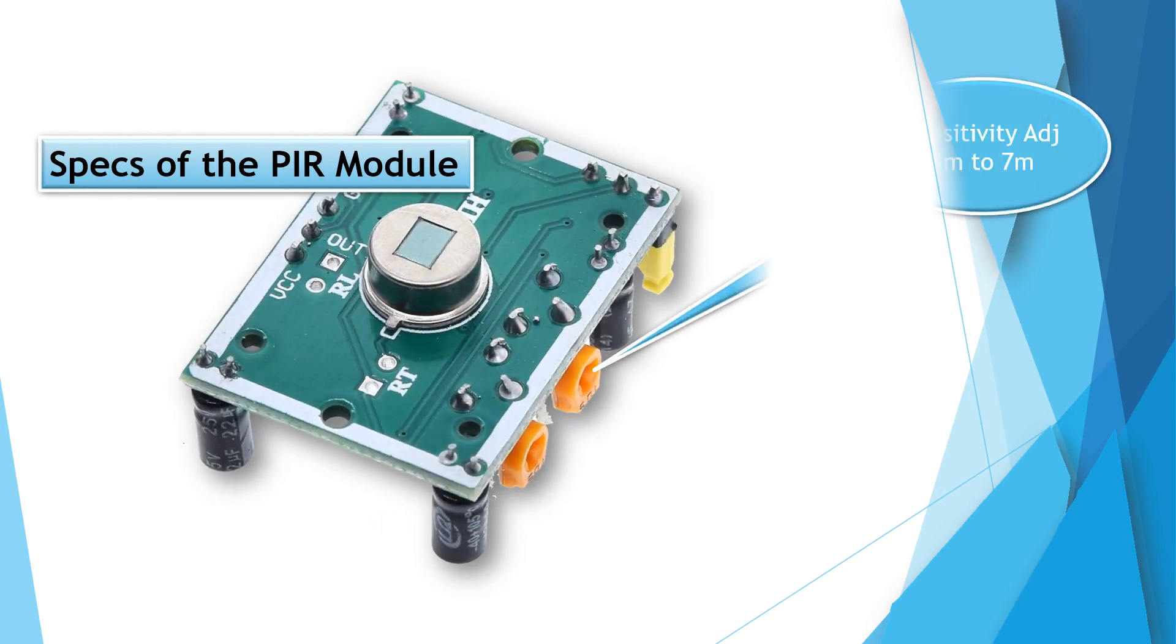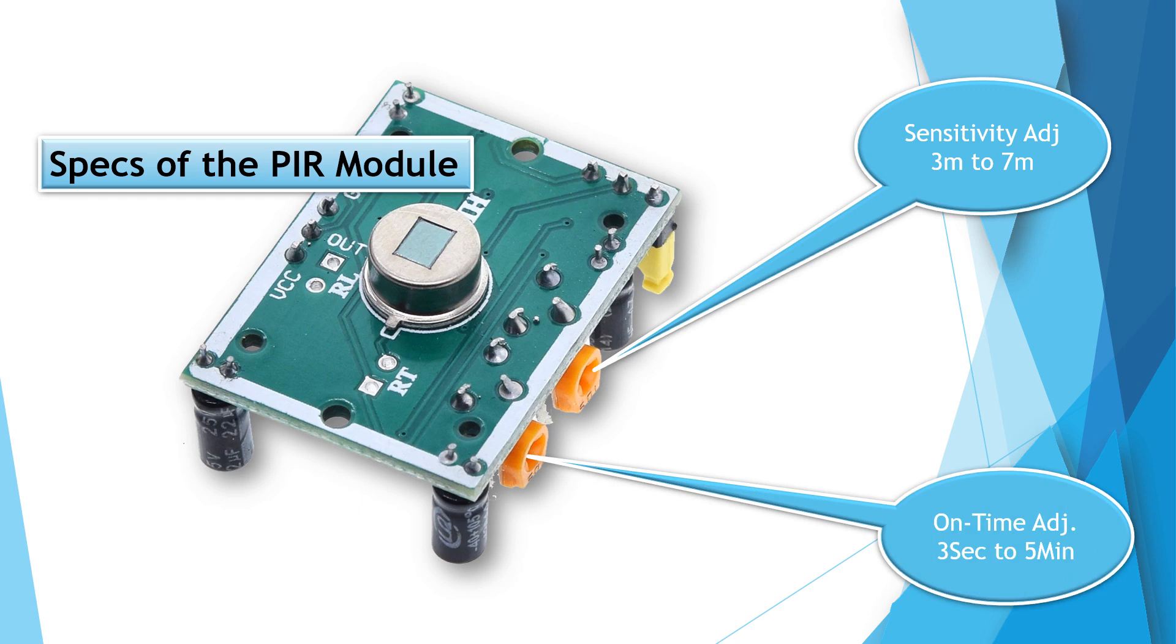A knob is provided to adjust sensitivity ranging from 3 meters to 7 meters perpendicular to the sensor. Sensitivity decreases towards the sensor's sides. A second knob adjusts the time for the output to remain high after IR detection. This period can be adjusted from 5 seconds to 5 minutes.